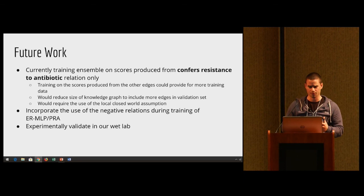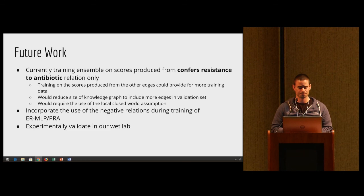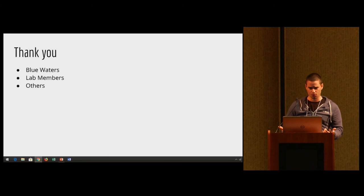For future work, we're still taking into account different training regimens for the stacked ensemble that we think will help improve the model. We're looking into incorporating the use of these negative relation types during our training of the ERMLP and PRA. However, these negative relation types are not really a common characteristic of knowledge graphs and we have tried using them and they did cause some overfitting. And then finally we're going to experimentally validate some of these results in our wet lab and actually aim to predict some new cases of where genes are conferring resistance to common antibiotics.